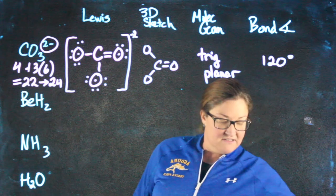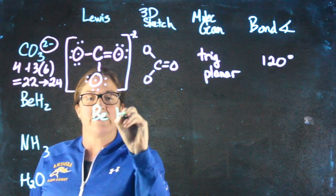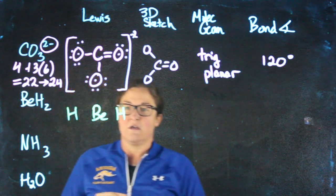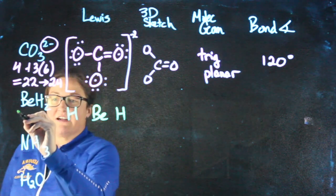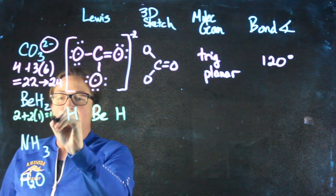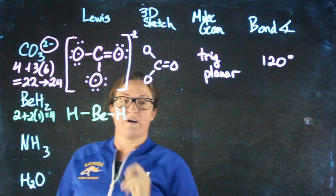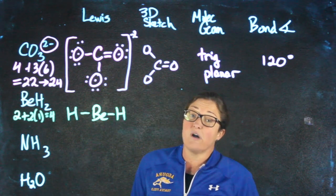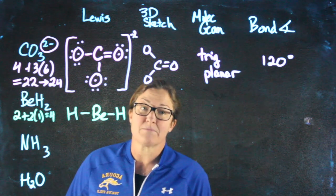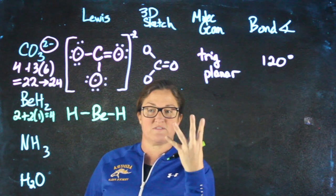Up next is BeH₂. Beryllium is going to go in the middle, hydrogen is on the outside. Beryllium has two valence electrons. Each hydrogen has one. I have a grand total of four electrons to work with. Two, four. Did I satisfy the rule of octet? No, but both hydrogen and beryllium are exceptions. Hydrogen wants two electrons, beryllium wants four.